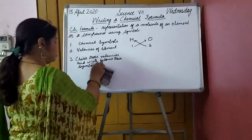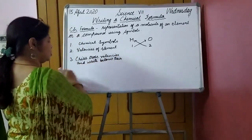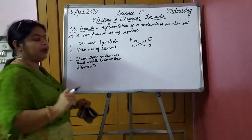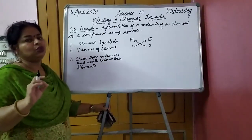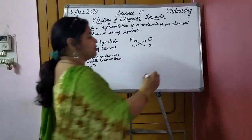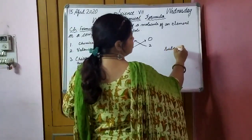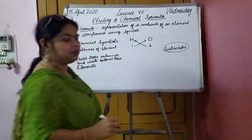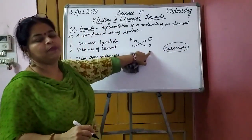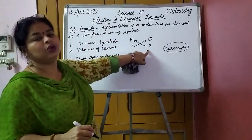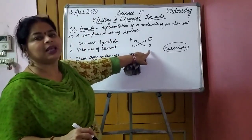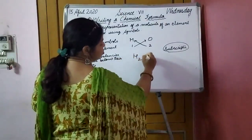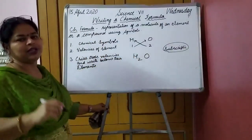Criss-cross means like this — 1 goes to the other side and 2 goes to the other side, meaning they multiply oppositely. Criss-cross the valencies and write them as subscripts below their elements. These subscripts — 1 and 2 — are what you write to the right of the chemical symbols. So when you criss-cross, you write down the valencies as subscripts. Like H2O — the formula is ready.